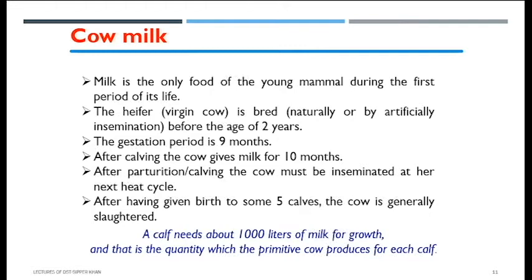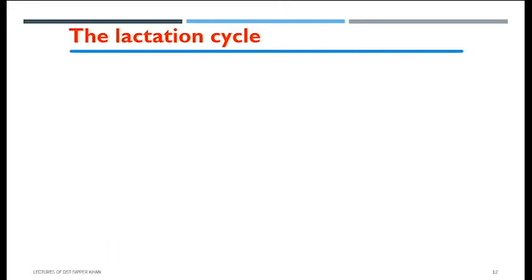It is important to note that the production of milk is associated with the birth of calves. Impregnation and continuation of the next gestation period is therefore important — that is why cows need to be impregnated again at their next heat cycle. The process starts when the heifer is approximately under two years old. In this mechanism, we also hear the term lactation cycle.